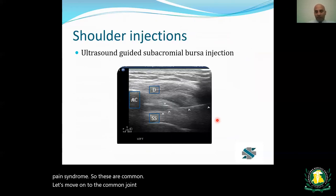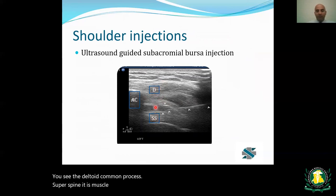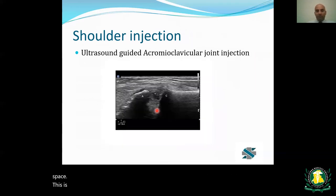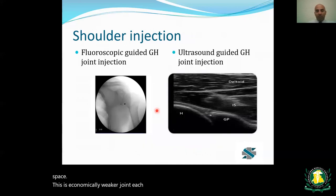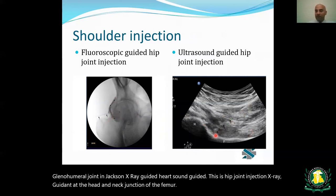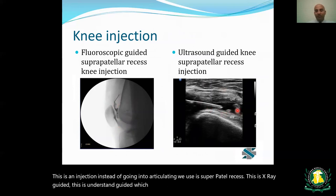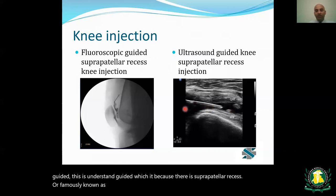Common joint injections include shoulder, hip, and knee. Subacromial bursa injection targets the space between the deltoid and supraspinatus muscle. Acromioclavicular joint injection and glenohumeral joint injection can be performed under X-ray or ultrasound guidance. Hip joint injection is done at the head-neck junction of the femur under X-ray or ultrasound. Knee injection uses the suprapatellar recess — also known as the suprapatellar pouch — which connects with the intra-articular space, performed under X-ray or ultrasound guidance.